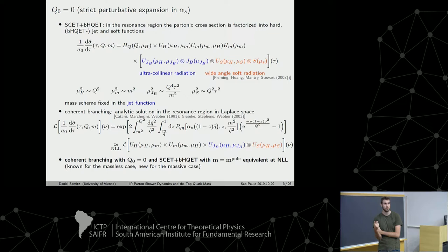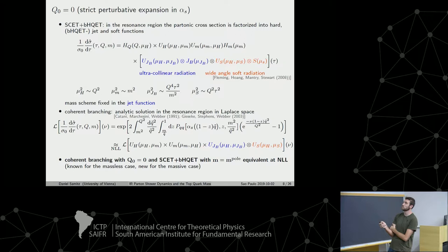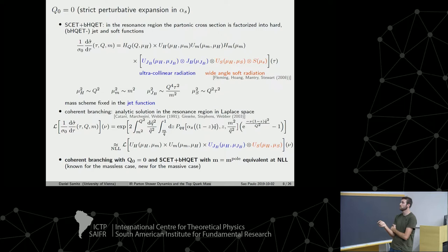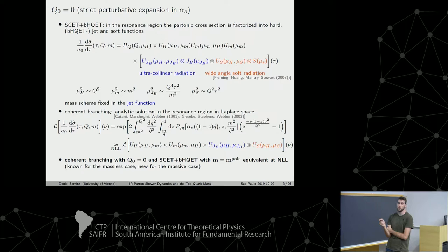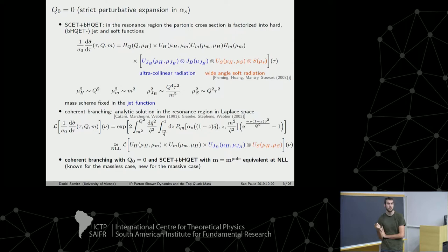For the two-jettiness observable, there exists an analytic solution to the coherent branching algorithm. When expanded to next-to-leading log accuracy, throwing away terms higher in the log counting, you can bring it to a form with evolution kernels that are exactly the same as those in the QCD factorization theorem. So these two things are analytically equivalent at next-to-leading log. Furthermore, since we have full control over the mass scheme in the factorization theorem and coherent branching without a shower cutoff is just the zero-cutoff limit, we can conclude that the mass scheme effectively implemented in the coherent branching algorithm is the pole mass.